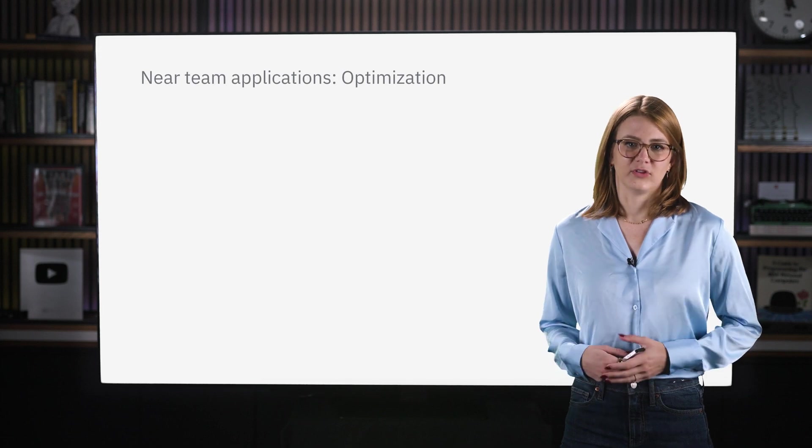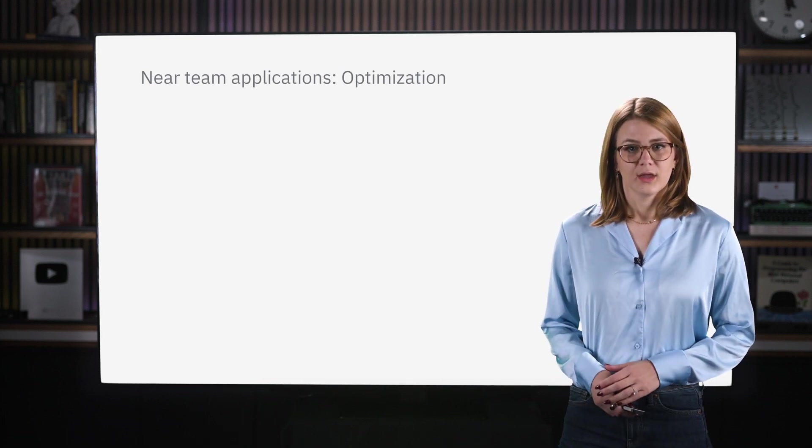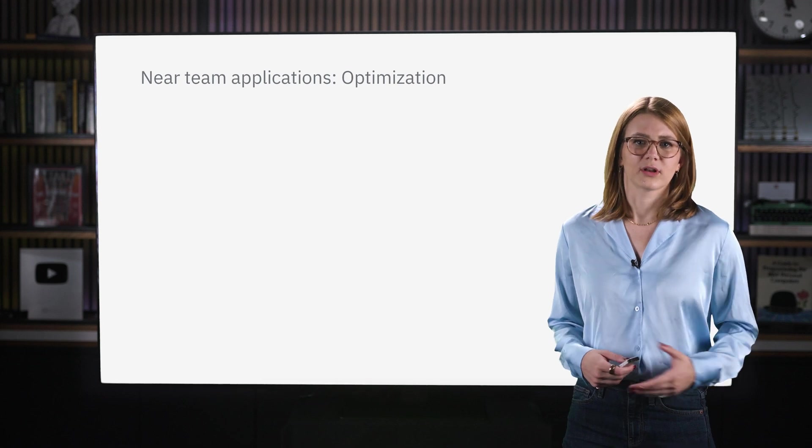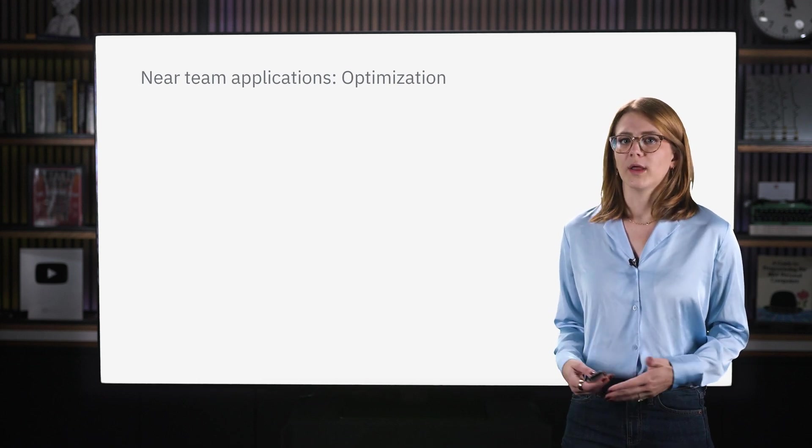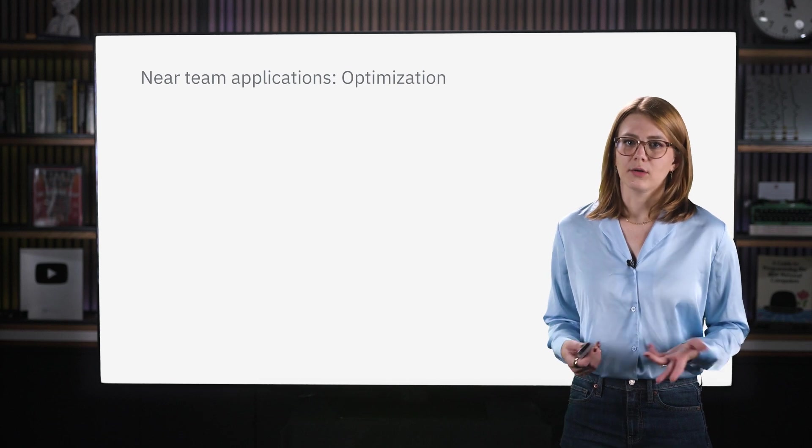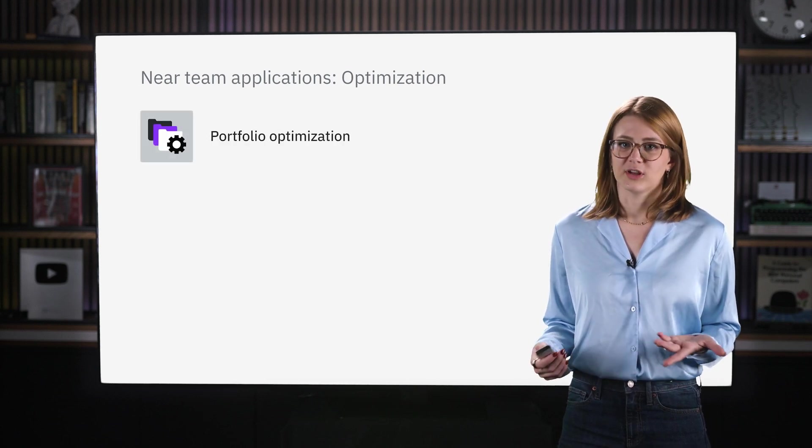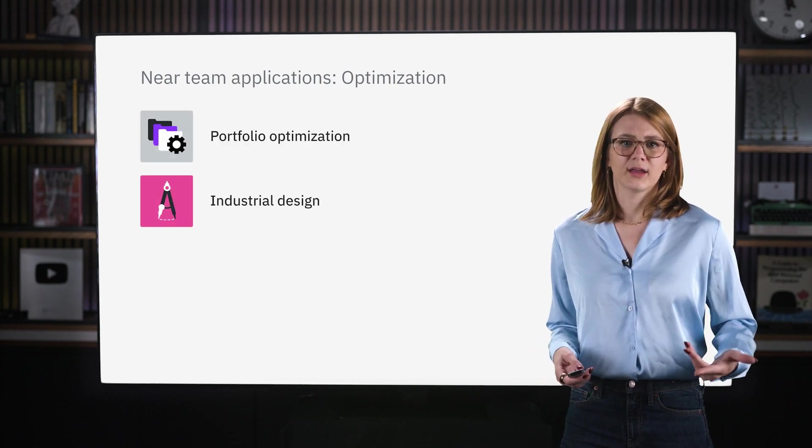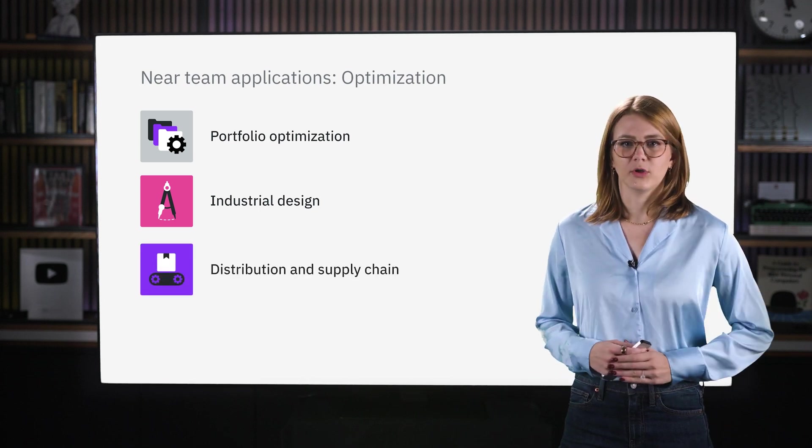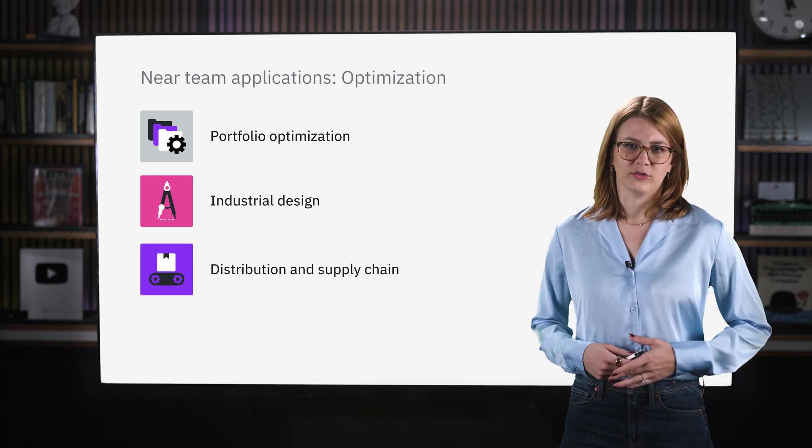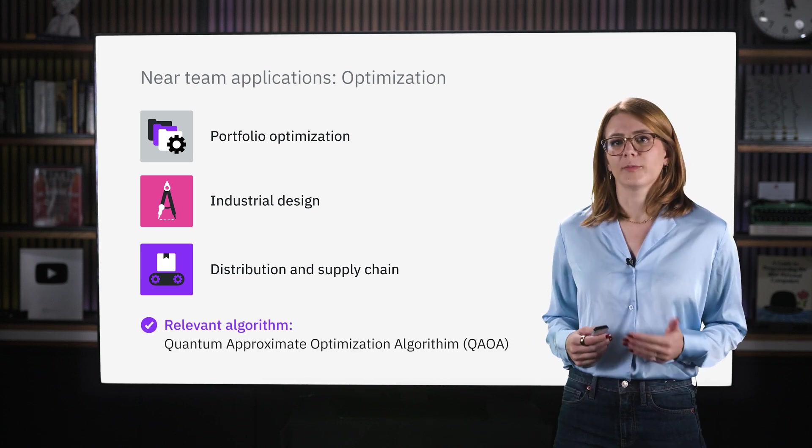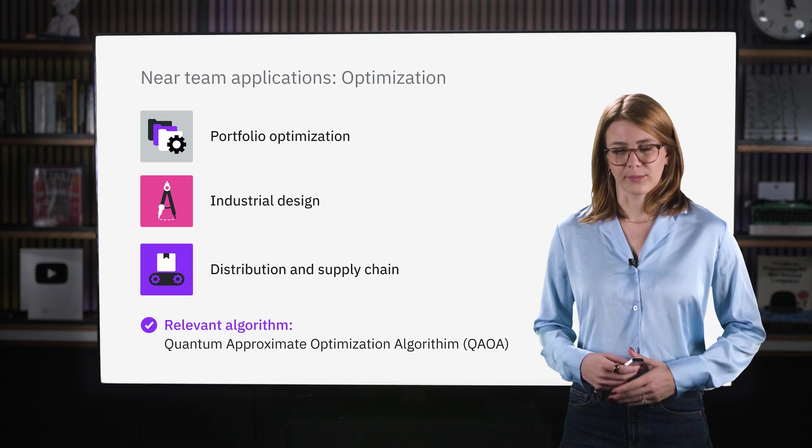The next application area is optimization. Now, optimization is pretty ubiquitous in computing, as you can imagine. So the use cases are quite numerous and varied. However, some examples that we hear about a lot are portfolio optimization in finance, industrial design, and also distribution and supply chain. The most common algorithm you will probably hear related to optimization is the one we have already covered in some depth, the quantum approximate optimization algorithm, or QAOA.